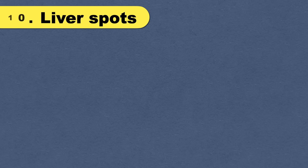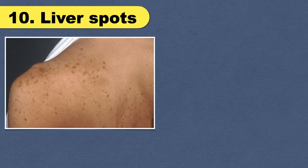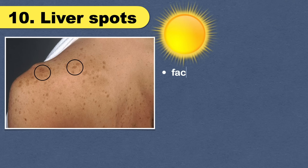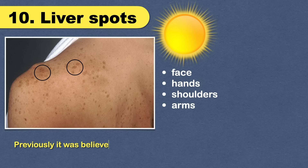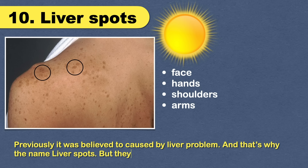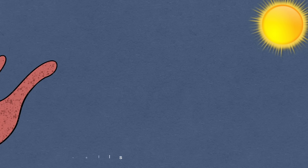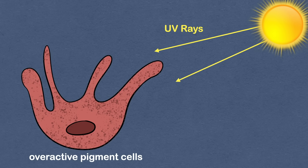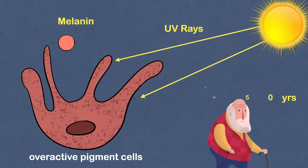One more thing worth mentioning is liver spots, or age spots. You may find small, flat, dark areas on the skin that vary in size and usually appear on sun-exposed areas such as the face, hands, shoulders, and arms. Previously believed to be caused by liver problems — hence the name — they are actually physiologically unrelated to the liver. Liver spots are caused by overactive pigment cells; ultraviolet light speeds up melanin production and they are common over the age of 50.